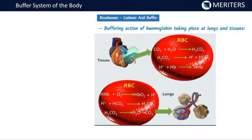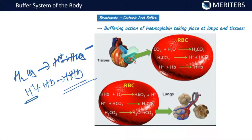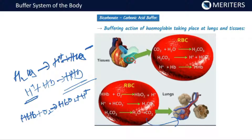Hemoglobin is found in your RBCs. In the tissues, carbon dioxide from tissue metabolism reacts with water to form carbonic acid, which dissociates into H+ and bicarbonate ions. This H+ is absorbed by hemoglobin to form hydroxyhemoglobin, absorbing the free H+ ions. When the RBC reaches the lung, hydroxyhemoglobin combines with abundant oxygen to form HbO2 and releases H+ ions. These H+ ions combine with bicarbonate to form carbonic acid, which releases CO2 back into the atmosphere. That is how hemoglobin acts as a buffer.